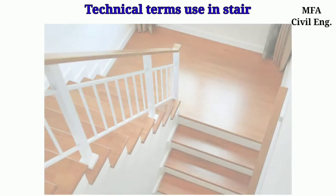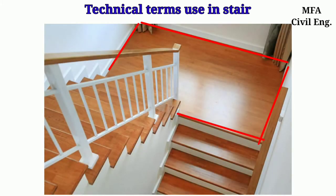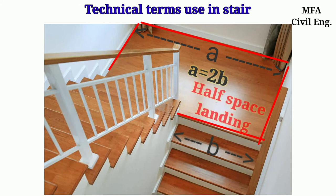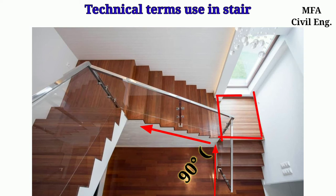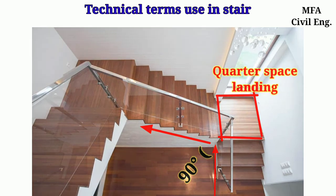If the landing is of a rectangular shape having a length equal to twice the width of the stair, then the landing is called the half space landing. If two flights of a stair run at right angles to each other and are separated by a square landing, then the landing is called the quarter space landing.